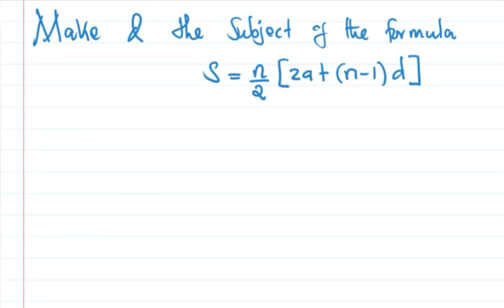Let's see the solution of this one. We should make d the subject of the formula. The equation is S equals n over 2 times open bracket 2a plus open bracket n minus 1 close bracket d close bracket. This equation is used in arithmetic progressions when we want to find the sum of the terms, where S is the sum of the terms, n is the number of terms, a is the first term, and d is the common difference. We've been asked to make d the subject.